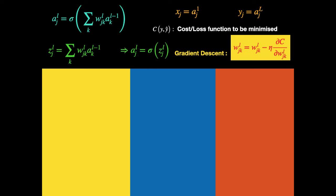The minimization process involves updating weight values using the gradient descent formula until we reach the appropriate weight values that minimize C. The learning rate eta must be chosen appropriately: if eta is too high you will keep jumping around the cost function landscape without converging, and if eta is too small the learning process will be very slow. You need to choose an appropriate value of eta, which you can learn from experience.